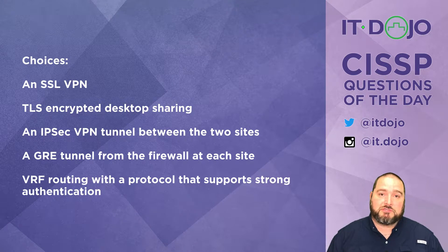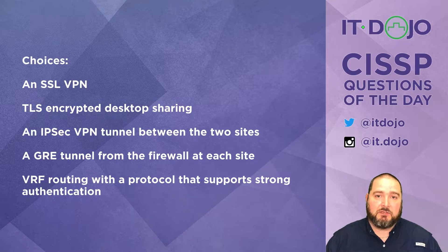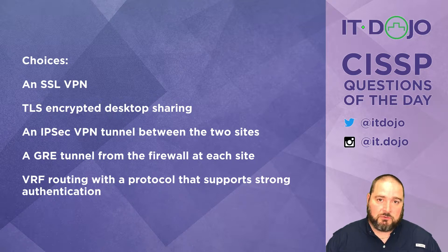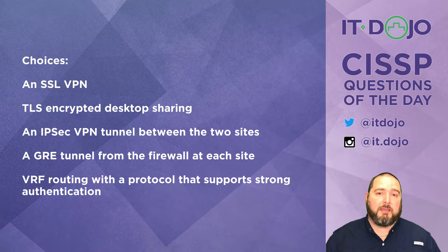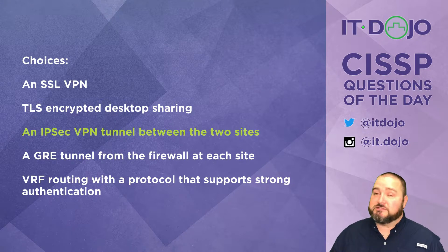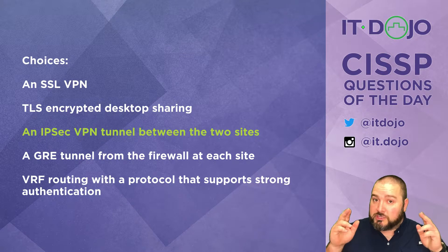Option two — TLS encrypted desktop sharing — while it would certainly allow interaction with resources somewhere else, it's not how we connect sites together, so that is also not the choice we're looking for. The third option is the one you're looking for: an IPsec VPN tunnel between the two sites.